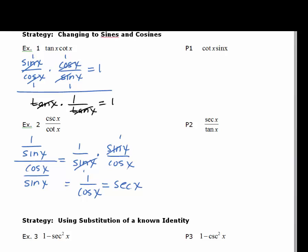For practice problem 1, we have cotangent x times sine x. Cotangent is cosine x over sine x, and we multiply that by sine x. If it helps to put sine x over 1 so you can see it better, that's fine. We cancel the sines, and our final answer is cosine x.